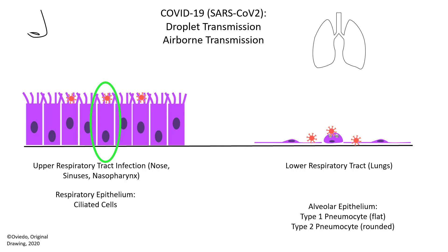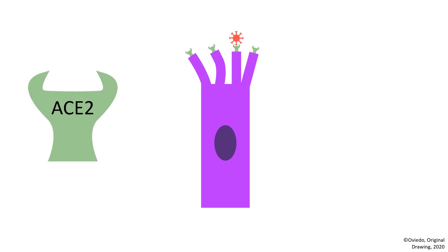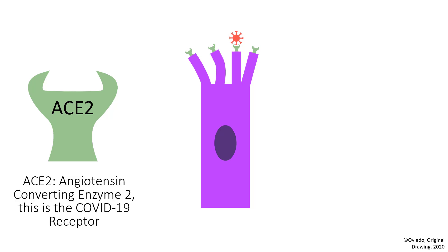Let's take a closer look at what happens in a respiratory cell. Here I've drawn it much larger. You can see it has these green receptors for the COVID-19 virus. Here I've drawn the receptor for COVID-19, known as ACE2, much larger. ACE2 stands for angiotensin converting enzyme 2. This is the receptor that the COVID-19 virus binds in order to enter these cells. In normal situations, the body uses this receptor to control physiologic processes such as blood pressure.